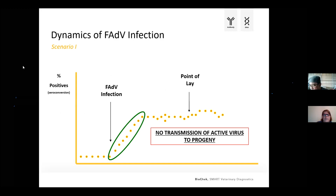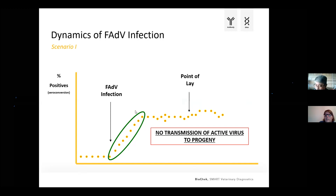If you see the breeder flock is seroconverting before or during lay, that's actually what we want. A breeder flock will get in contact with fowl adenoviruses present in the environment, will seroconvert, and this will prevent transmission of those serotypes to the progeny. So breeders are protected, and you also prohibit vertical transmission. In scenario two, a breeding flock that had no contact during rearing and then gets infected on the production farm will have a lot of vertical transmission problems — the flock may show limited or no symptoms itself, but you will have many problems in the progeny.